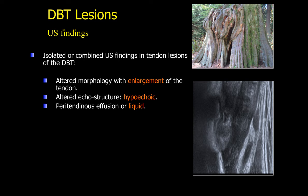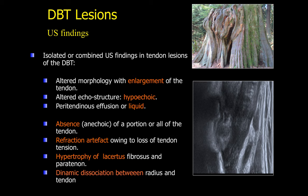Isolated or combined ultrasound findings in tendon lesions include: tendon enlargement with altered morphology, altered echo structure with a hypoechoic tendon, and peritendinous effusion or fluid inside the tendon. In the case of a tear: absence of a component or the entire tendon, refraction artifacts owing to the loss of tension, lacertus fibrosus and paratendon hypertrophy, and dynamic dissociation between the radius and the tendon.